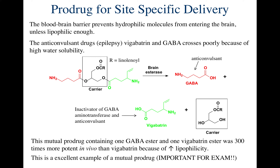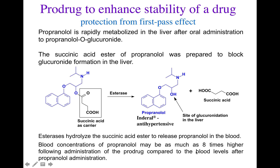Please go through this slide again and make sure that you understand this, because this is an excellent example of a mutual prodrug — where you have two actives. In this case, both Vigabatrin and GABA are the two actives. Mark this as very, very important for the exams, where we can ask you a question on prodrugs for site-specific delivery as well as where you can use a mutual prodrug approach.